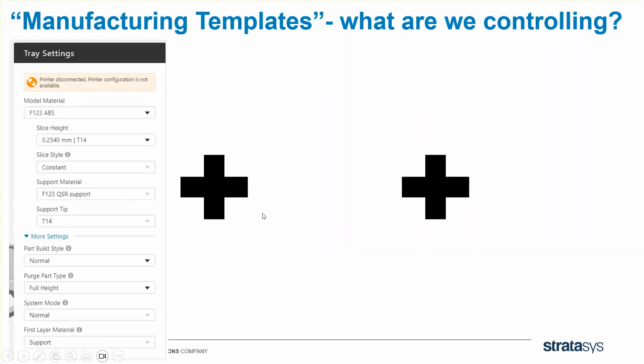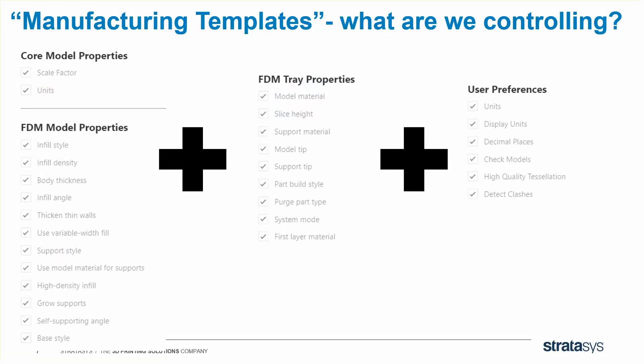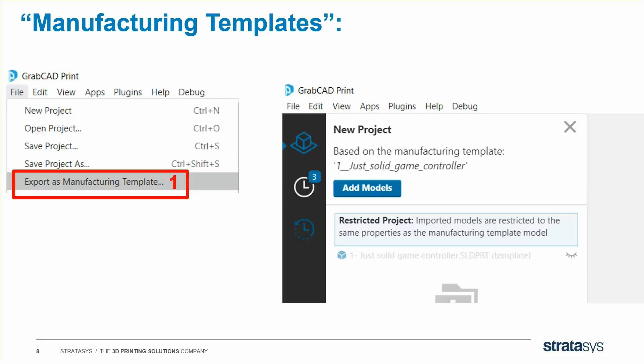I've taken screenshots of those three menus here for your reference, so you can think of Manufacturing Templates as controlling all these settings plus your choice of machine. When you make a Manufacturing Template, our developers did a really cool thing where they show you explicitly in text boxes exactly what settings you're controlling. You can't uncheck any of these text boxes yet, but that'll come in a future version. So how do you make one? First, you put a part in your tray — it doesn't matter which one, the part will be removed during the template process. Then you set all these settings that you can see here. When you're ready, you go to File, Export as Manufacturing Template. That'll make a .printmt file, which is a template.